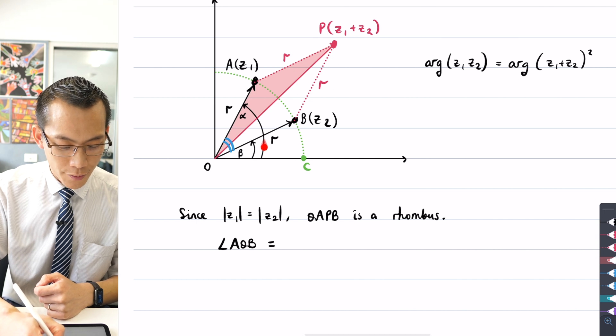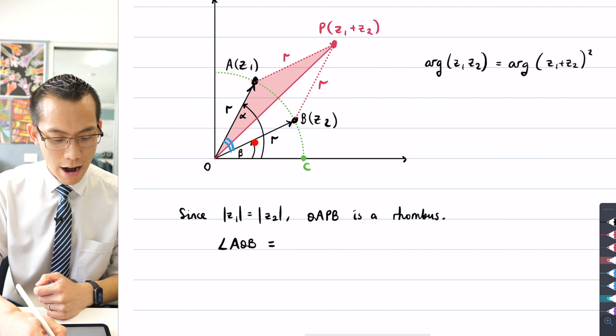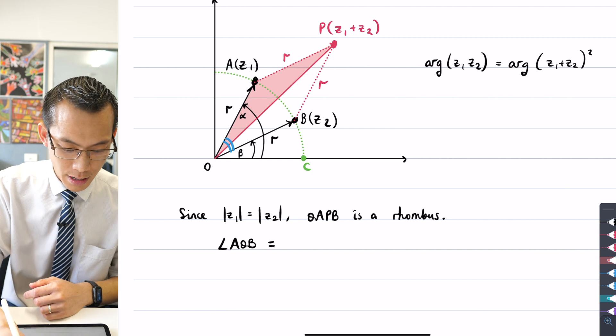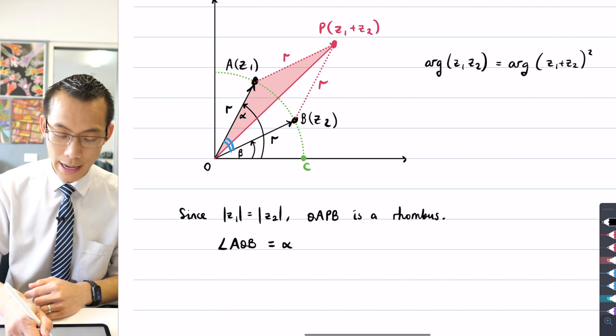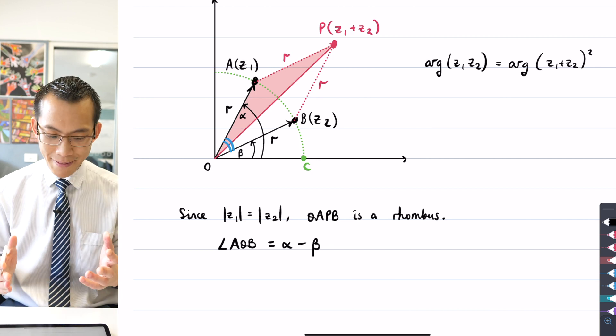Well, you can see I've got alpha, that's this big argument here, and then I've also got beta, this little argument here, and the angle AOB is just the difference between those. So I would say it is alpha, the big angle, take away beta, the little angle. Okay, that's really good.